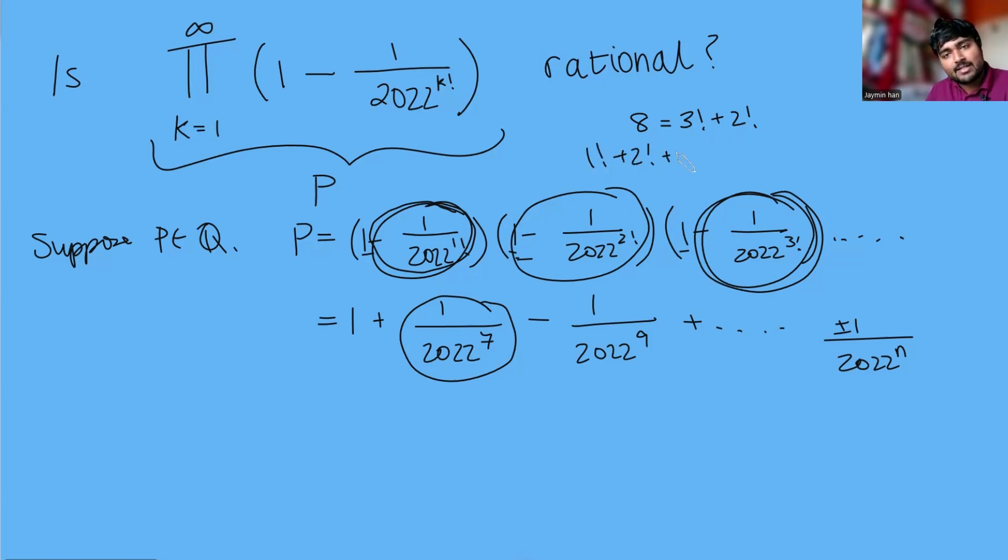You want to use the fact that 1 factorial plus 2 factorial plus 3 factorial and so on up to some number m factorial, that's going to be less than m plus 1 factorial. So you want to use that fact there to prove that if you can write a number as the sum of factorials like this, distinct factorials I should have mentioned, then there's only one way to do it.